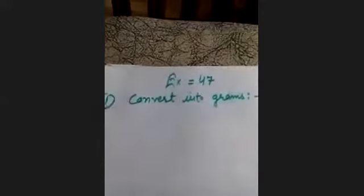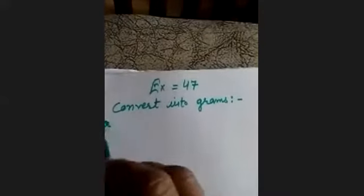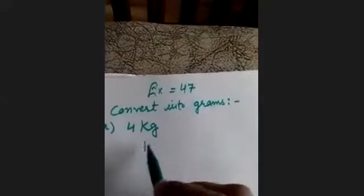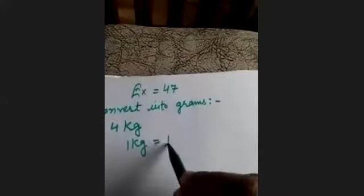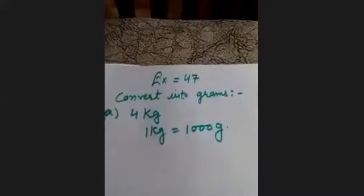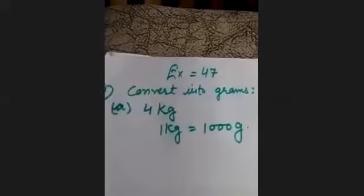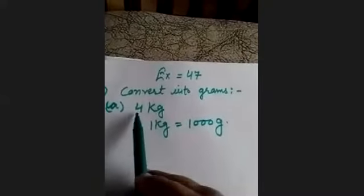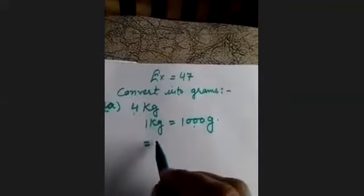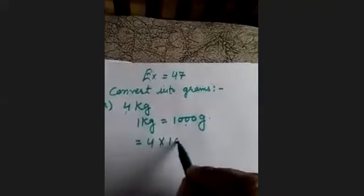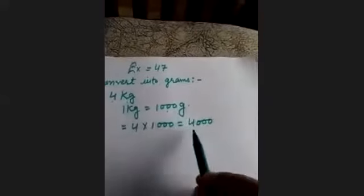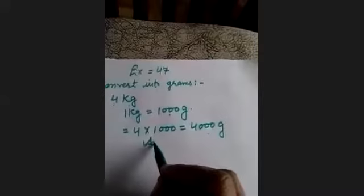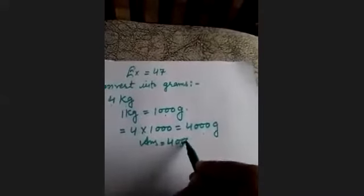Part A is 4 kg. As you know, in 1 kilogram we have 1000 grams. So to convert 4 kg into grams, we multiply 4 by 1000. 4 × 1000 = 4000. So in 4 kg we have 4000 grams.